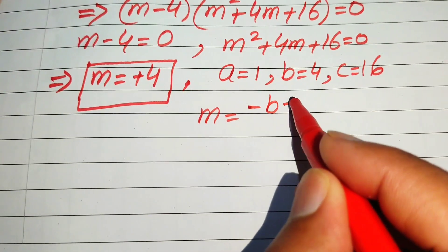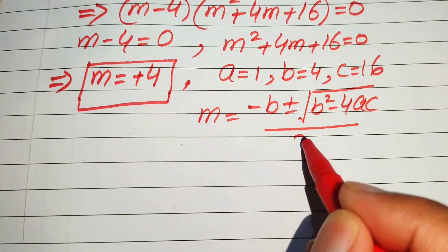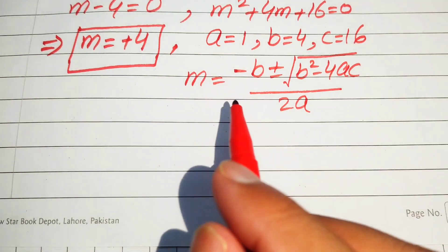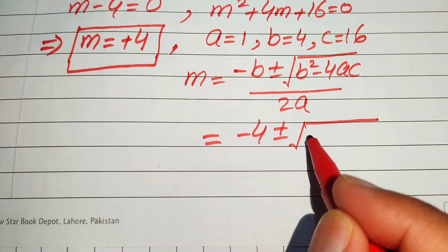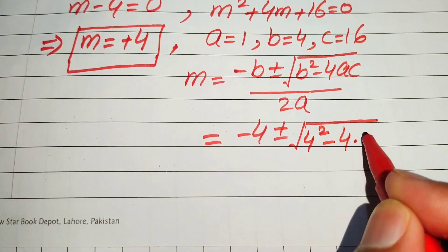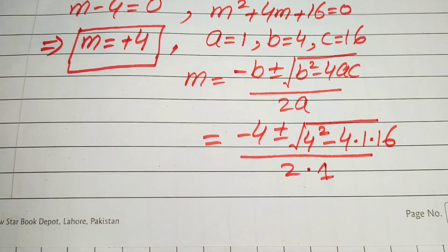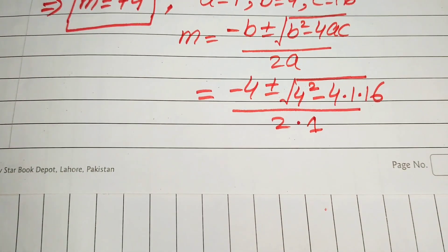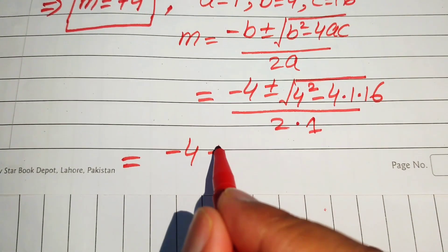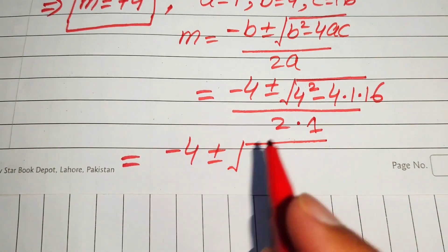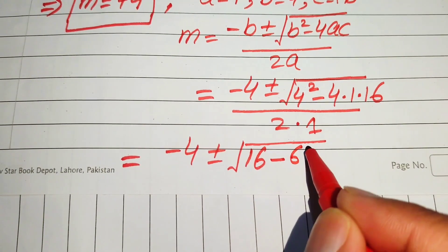The quadratic formula gives m equals negative b plus or minus square root of (b squared minus 4ac), divided by 2a. Substituting, we get m equals negative 4 plus or minus square root of (4 squared minus 4 times 1 times 16), divided by 2 times 1. So that is negative 4 plus or minus square root of (16 minus 64).